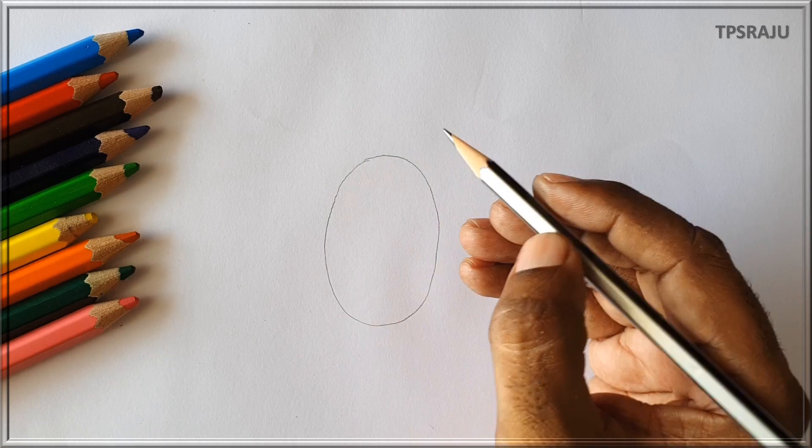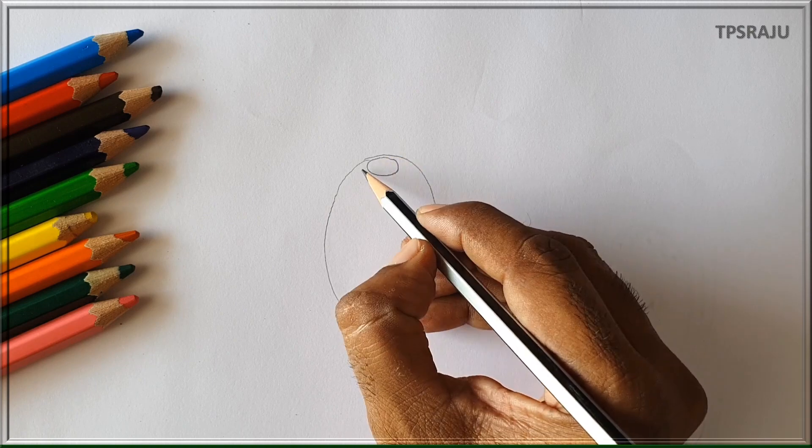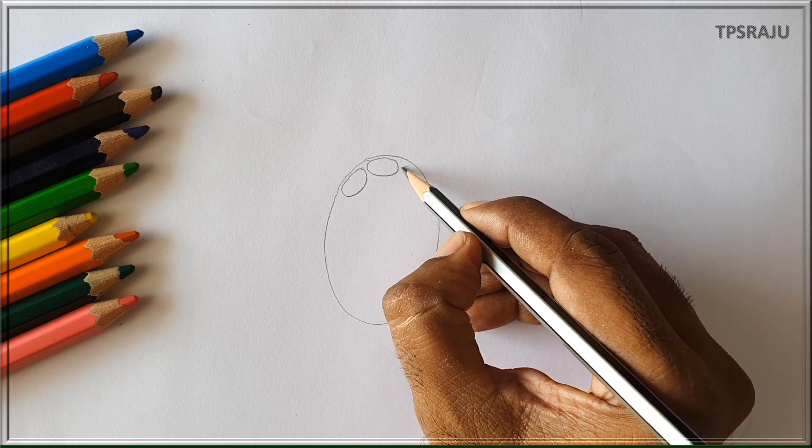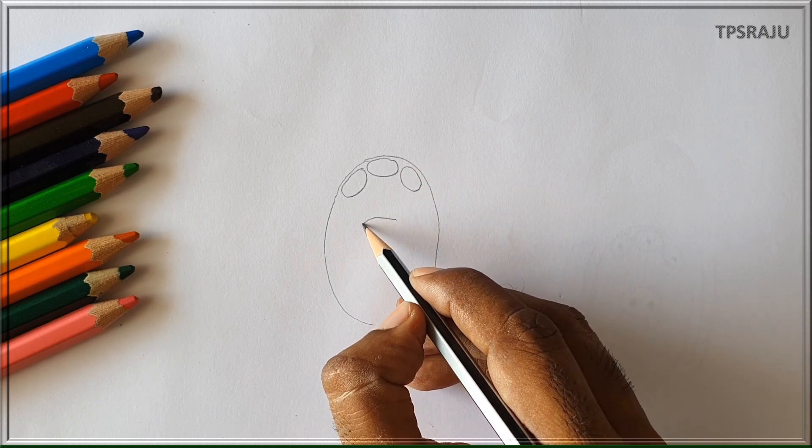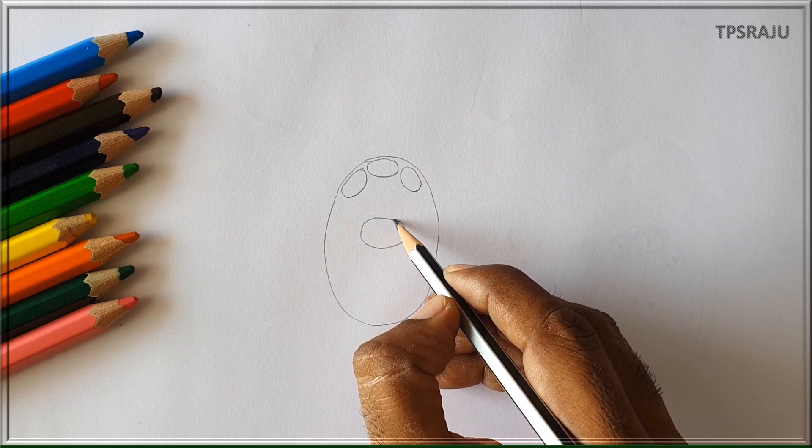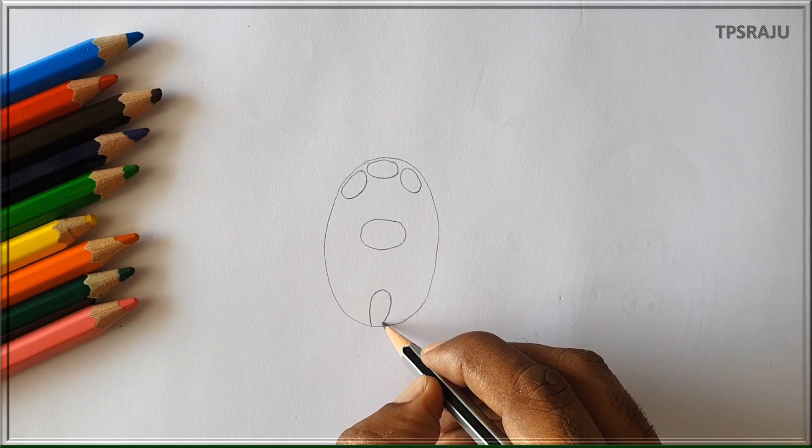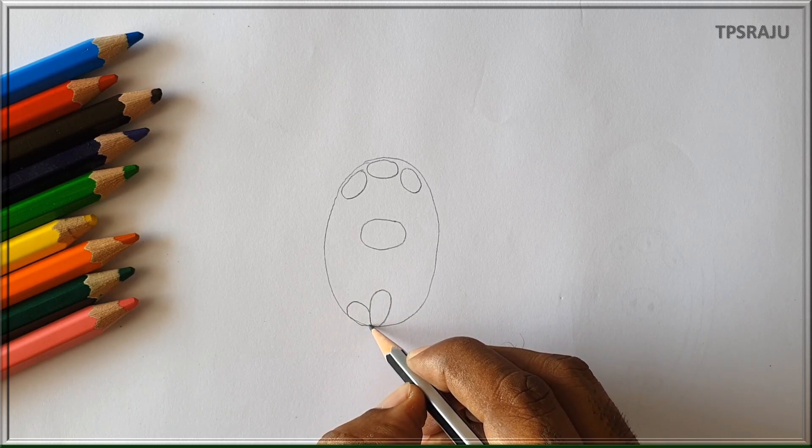They are: 3 antipodal cells, 1 secondary nucleus, 1 egg, and 2 synergids present on either side of the egg.